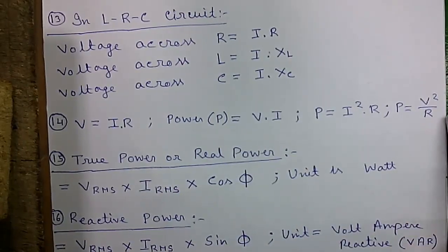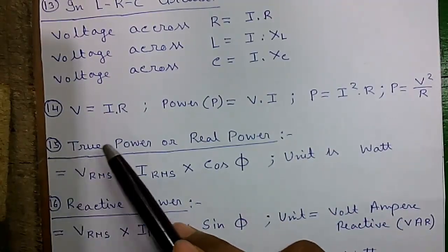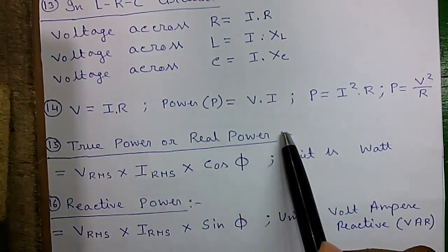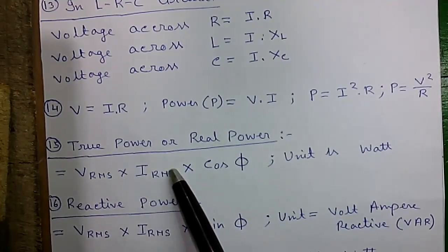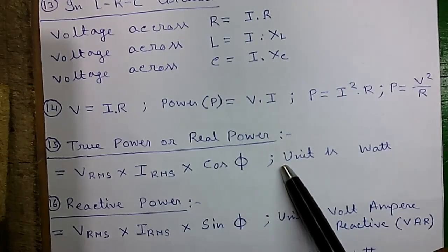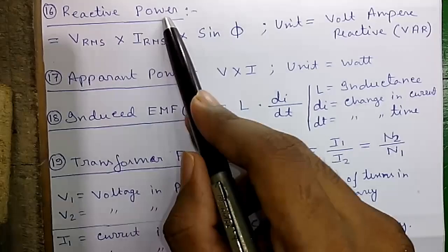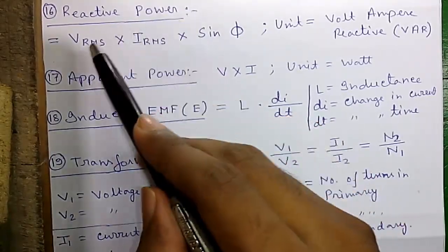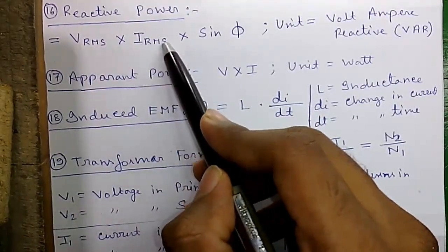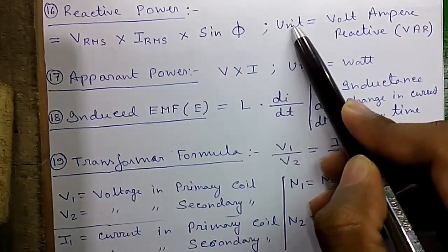There are several kinds of power. Formula 15: The true power or real power equals V_RMS into I_RMS into cos φ. The unit of true power is watt. Formula 16: Reactive power is given by V_RMS into I_RMS into sin φ.